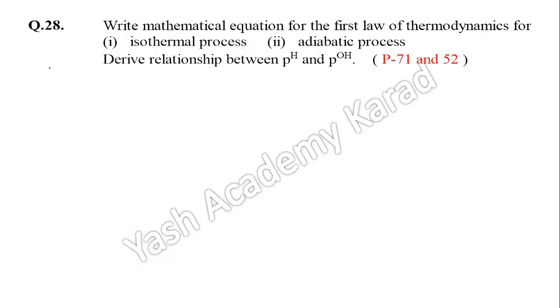Question number 28: Write the mathematical equation for first law of thermodynamics for isothermal process and adiabatic process, and derive the relationship between pH and pOH. Page number 71 and 52. This question covers two different units or chapters.